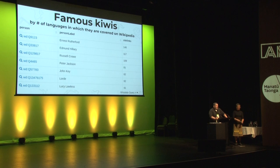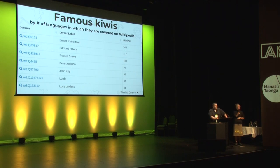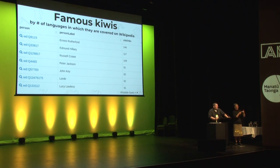How can I check that this is a really famous New Zealander? I can run a query. This is the result of a Wikidata query about who are the most famous Kiwis according to their coverage in different language Wikipedias. Turns out there's one Kiwi who's even more well covered on Wikipedia, and that is the physicist Rutherford — I did not think of that guy. And there are other people here, some of whom I don't know, but you probably do.